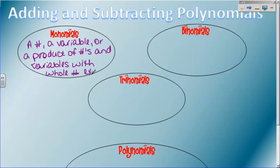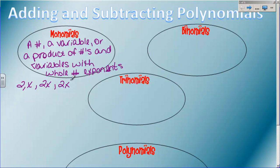We haven't talked about exponents that aren't whole numbers, but that is part of the definition, so we had to make sure it was in there. Examples of monomials are a number like the number two, a variable like the letter x, or a product of the two like 2x, or we can add exponents to it like 2x to the third. All of those are monomials - number, variable, or product of numbers and variables. So you've seen all these before; now they have a fancy new name. We call them monomials.